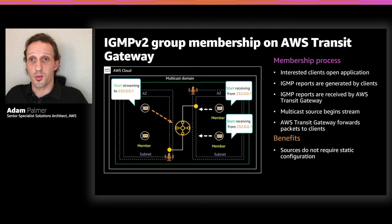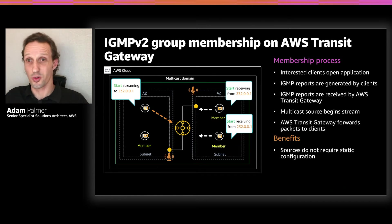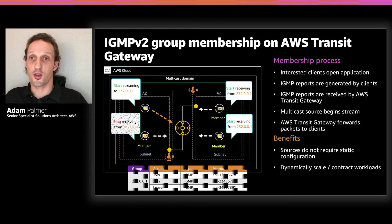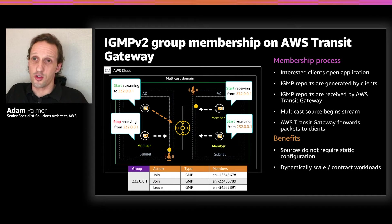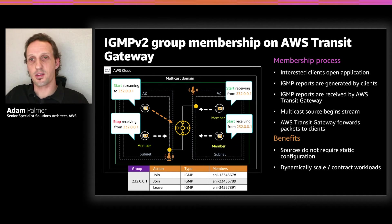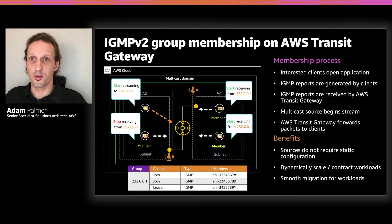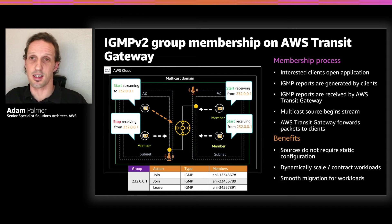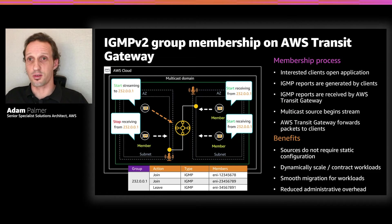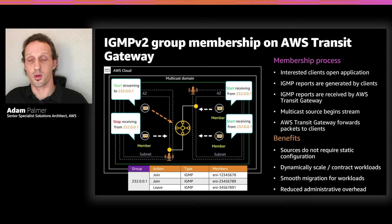With IGMP support enabled on the multicast domain, we no longer have to statically configure members or sources — this all happens automatically. At the point those packets arrive on Transit Gateway, it begins forwarding them to the members that have registered their interest. Benefits include: sources no longer need to be statically defined, workloads are able to dynamically scale and contract — more akin to how multicast applications work outside of AWS. If you're migrating existing multicast workloads, all you need to do is set up the multicast domain configuration and bring those workloads into the cloud, significantly reducing administrative overhead.